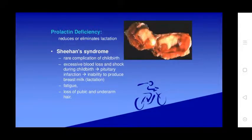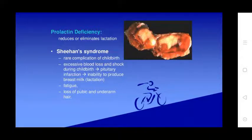Prolactin deficiency causes Sheehan's syndrome — a rare complication in which excessive blood loss or shock during childbirth leads to pituitary infarction and inability to produce breast milk. Symptoms include fatigue and lack of pubic and axillary hair.